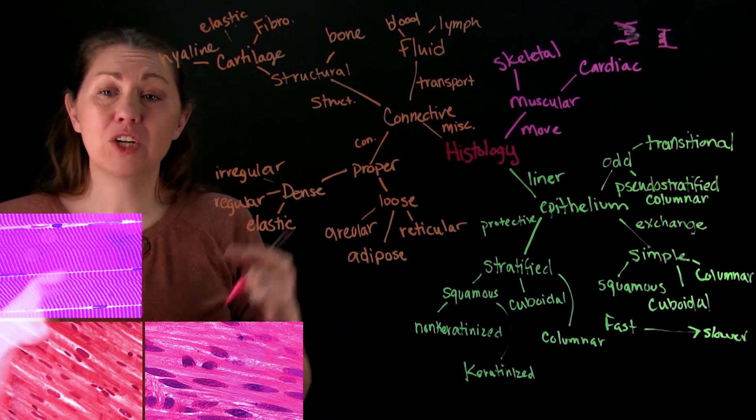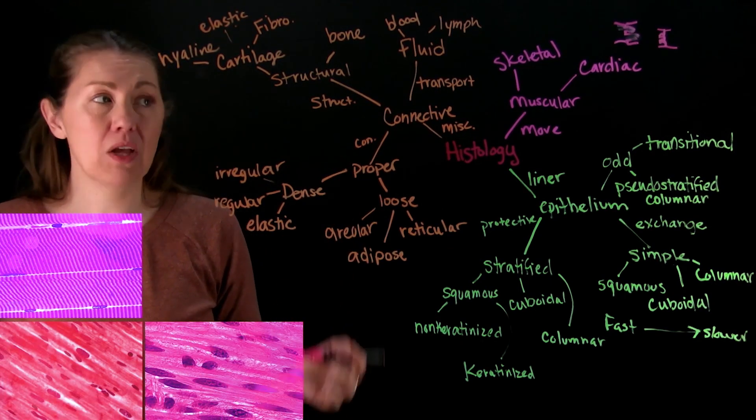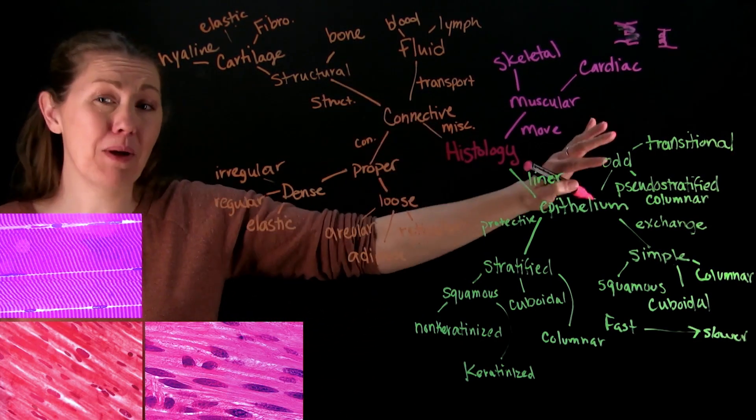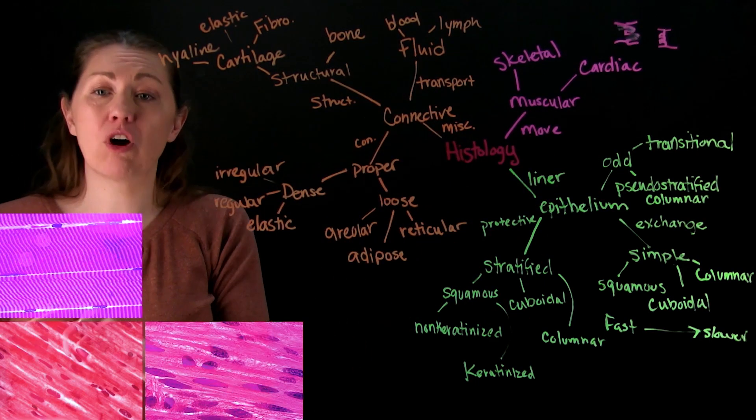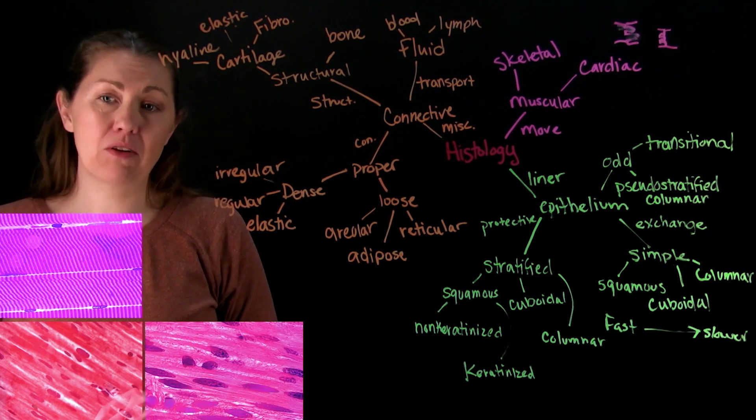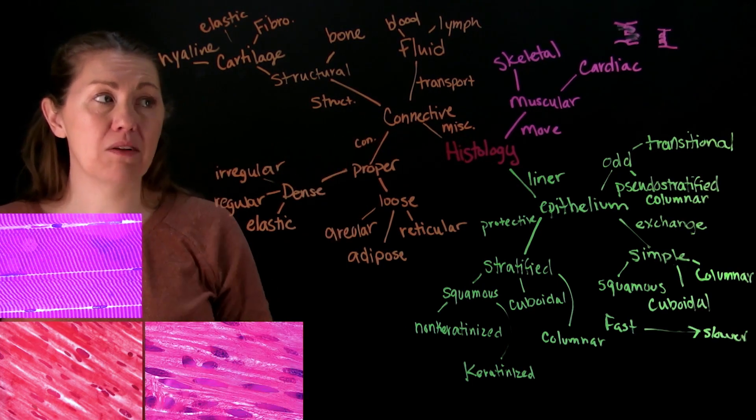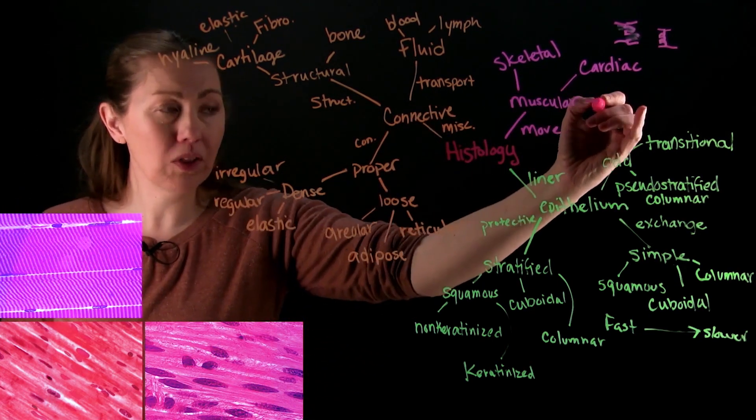We call those gap junctions and that allows the electrical signals that spread through the heart very quickly. So that's the best way to identify, you're looking for extra dark bands between the neighboring cells. Those are the intercalated discs, that's how you identify the cardiac muscle.